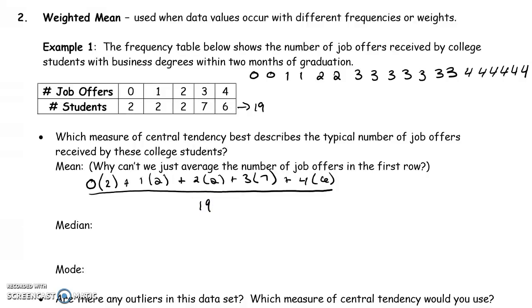When we calculate this out, calculate your numerator, divide by 19, we get an average of 2.7 job offers.